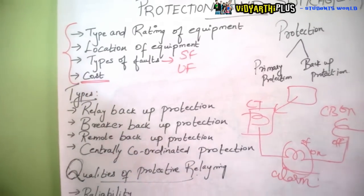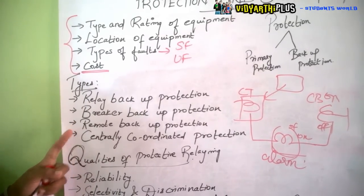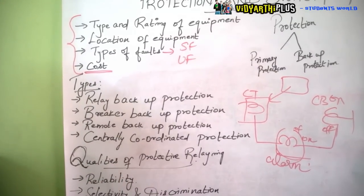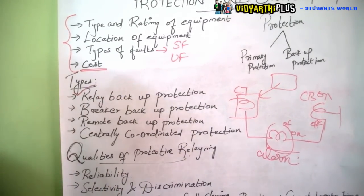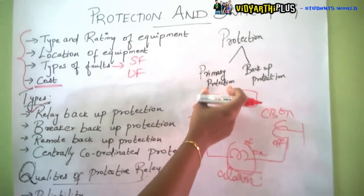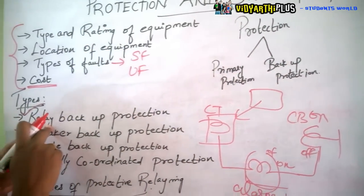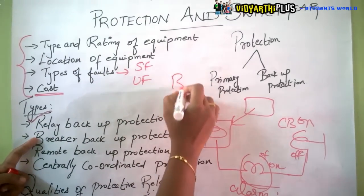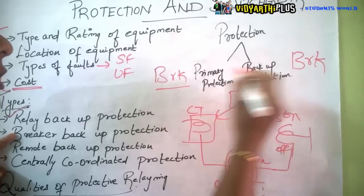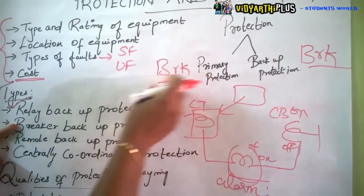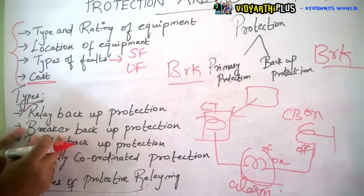Next are the types of protection: first is relay backup protection, next is breaker backup protection, then remote backup protection, and centrally coordinated protection. In relay backup protection, there is a separate breaker for primary protection and a separate breaker for backup protection — so there are two breakers, one for primary and one for backup.